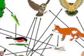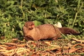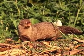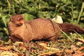Finally, we have the tertiary consumers at the top of the food web. In this case, we have the mongoose and the mountain lion. They eat both the primary and the secondary consumers.